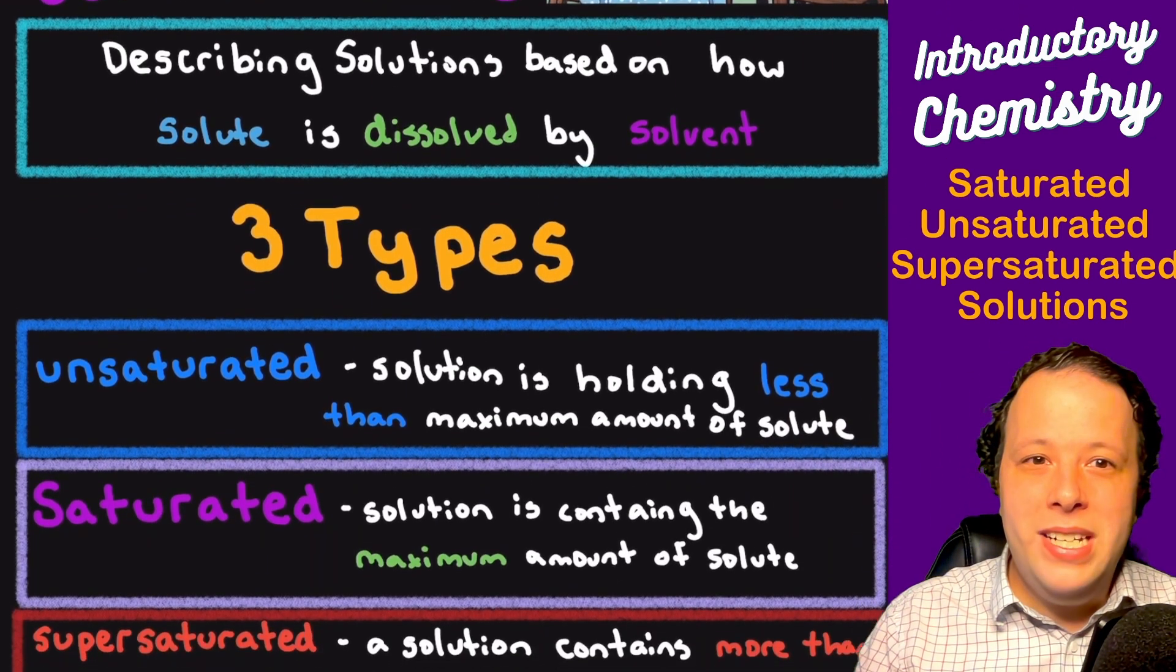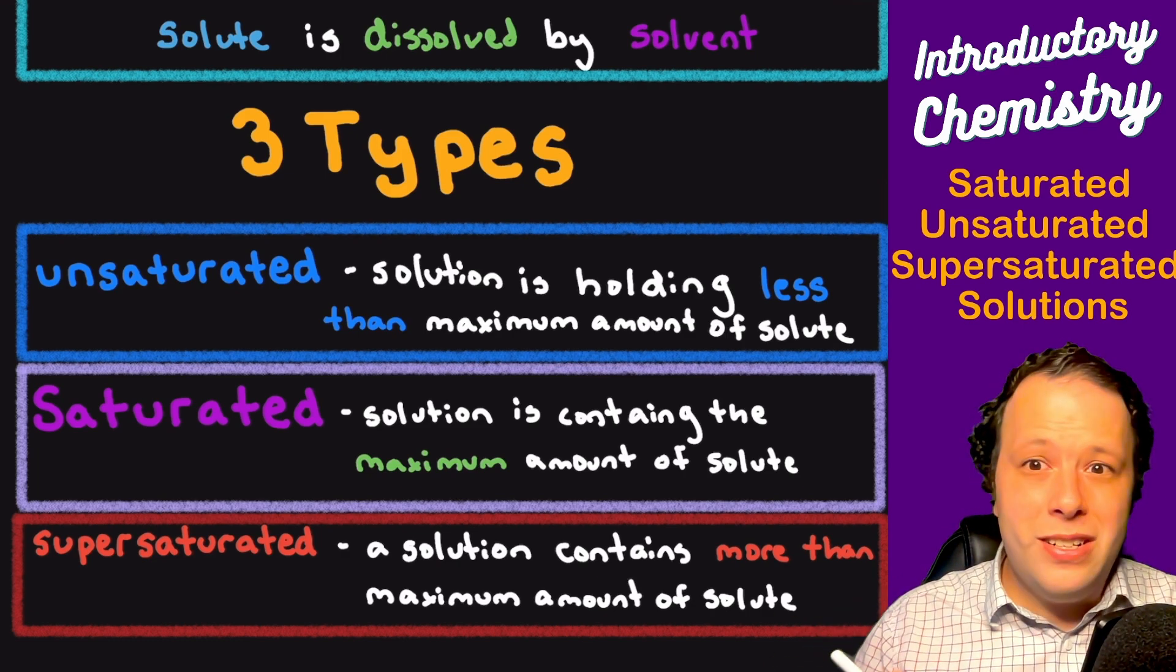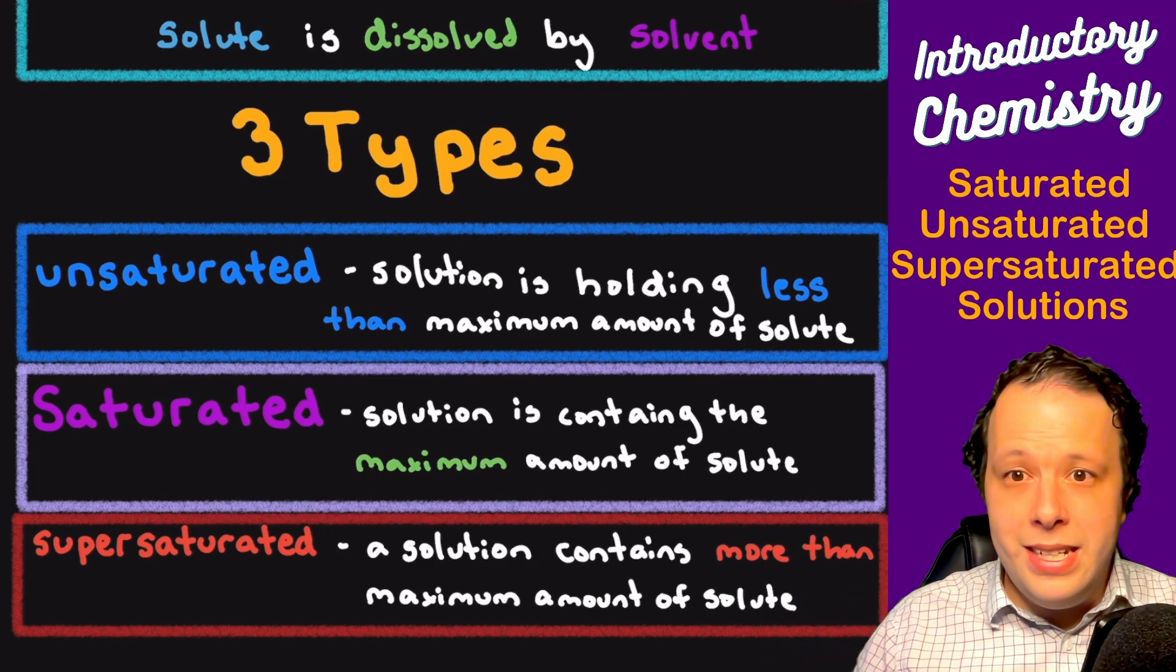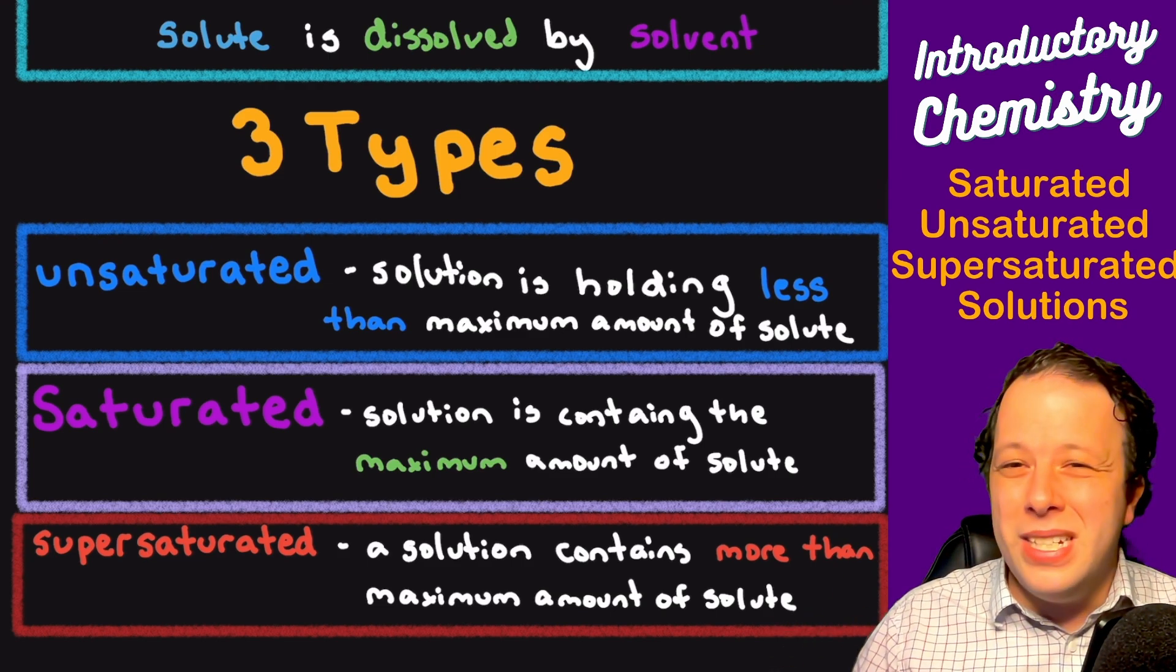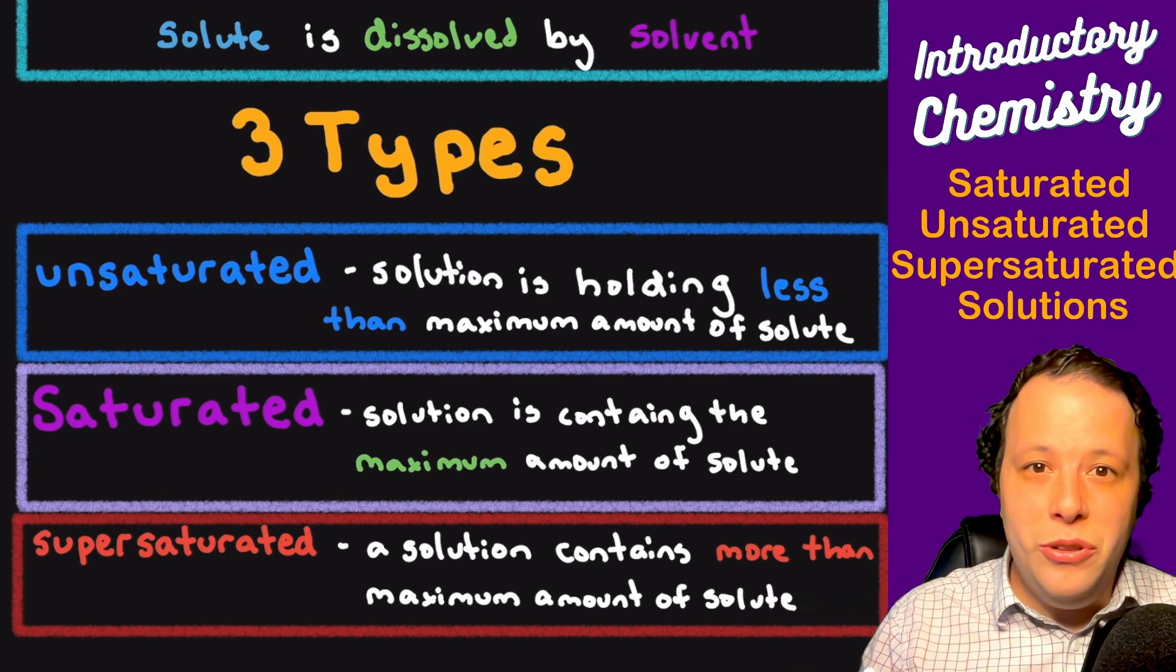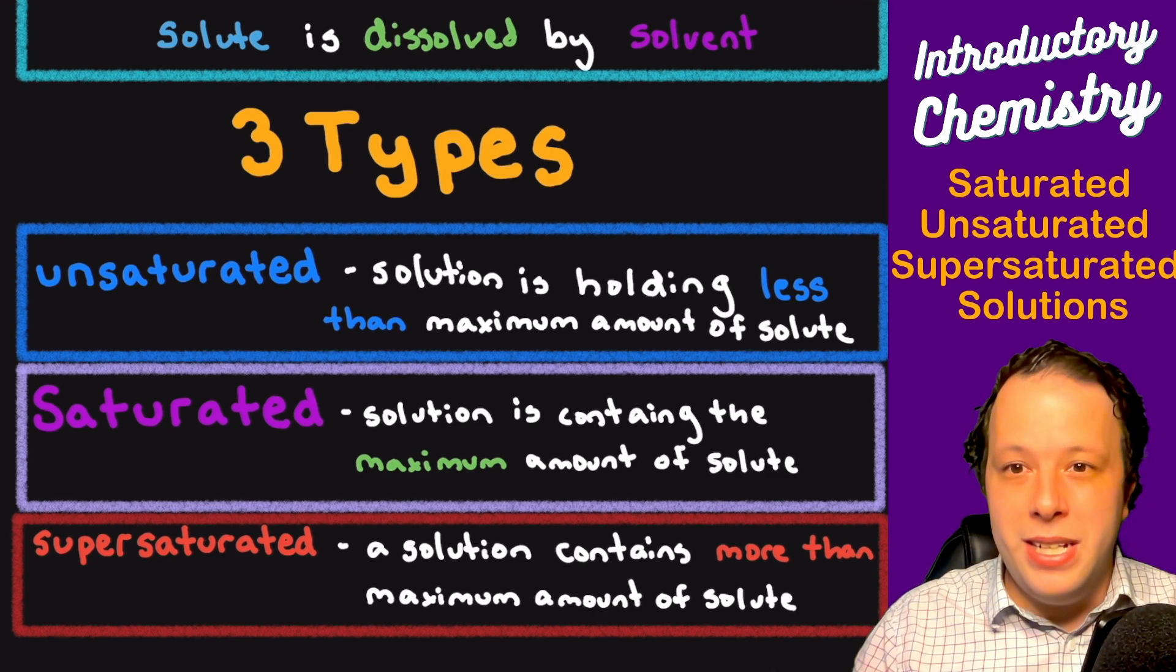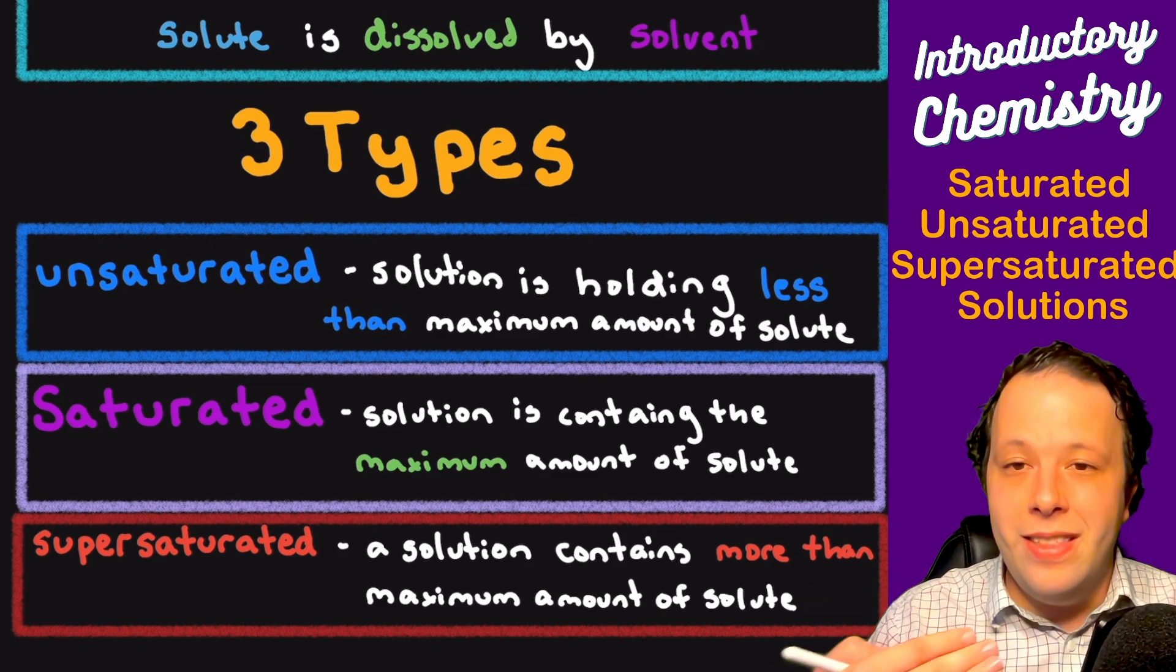The three types of saturation are all about how much of a solute there is. I like to think of it in terms of if you were to ever make iced tea at home or maybe coffee. If you make iced tea and add sugar to it, you taste it and you might be like oh it's not quite sweet enough. That's an unsaturated solution, meaning that the solution is holding less than its maximum amount of solute. You can add more.